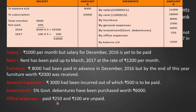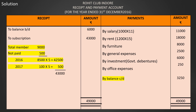Office expenses paid Rs. 250 and Rs. 100 are unpaid — unpaid means outstanding, which is not shown in receipt and payment account — by office expenses Rs. 250. Final picture: total receipts Rs. 49,000. Payments: salary Rs. 11,000, rent Rs. 18,000, furniture Rs. 8,000, journal expenses Rs. 2,500, investment government securities Rs. 6,000, office expenses Rs. 250. Subtracting all payments from Rs. 49,000, the amount remaining is Rs. 3,250 — that is our balance carried down.